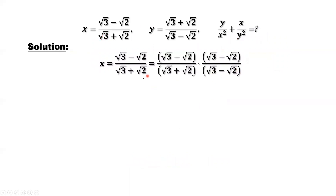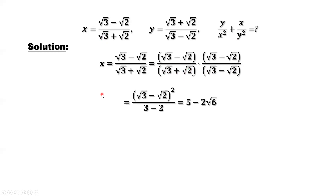The conjugate of this denominator is square root of 3 minus square root of 2. From here, we can use the formula: a plus b times a minus b equals a squared minus b squared. If we have square root of 3, the root sign will be cancelled — same for the root sign for 2. That gives us 3 minus 2, which is 1. Simplifying the numerator, we have 5 minus 2 times square root of 6.